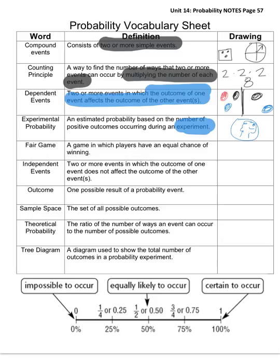Fair game. That's a game in which players have an equal chance of winning. Let's go back to the coin. It could be like heads or tails. You have an equal chance of getting either heads or tails when you flip that coin.